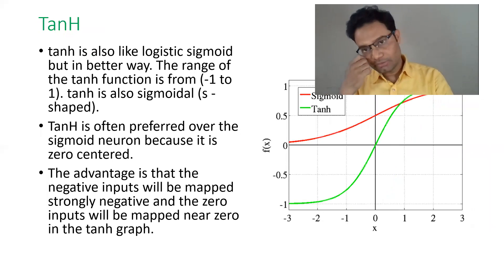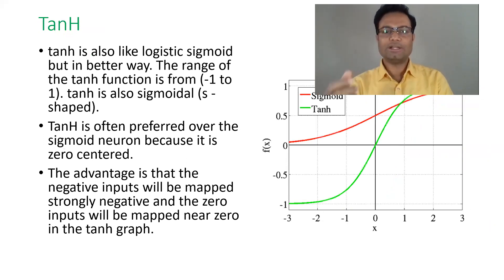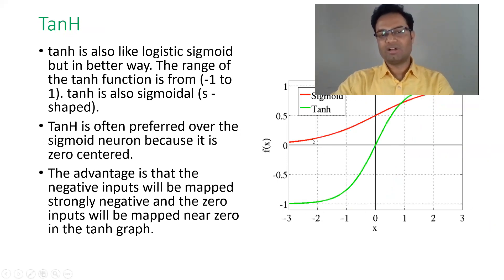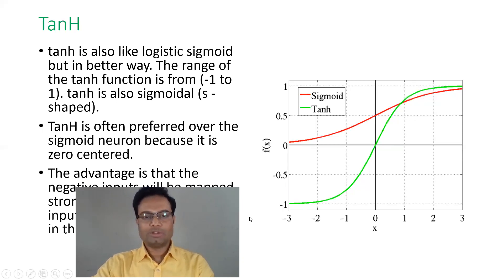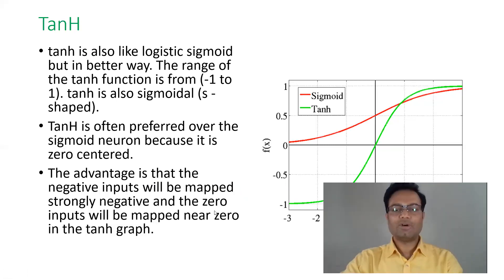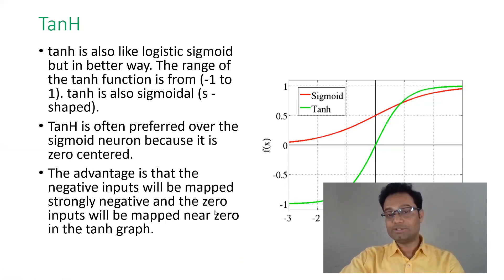If you see the tanh, it is also similar to the logistic sigmoid, but in a better way. The range of tanh is minus 1 to 1. I have put the graphs of both sigmoid and tanh. Sigmoid goes from 0 to 1, while tanh goes from minus 1 to 1. The benefit of having minus 1 is that it captures all the negative things as well. That's why tanh is more detailed over the sigmoid neuron, because it is zero-centered and captures the negative part also.